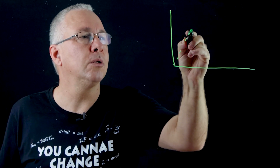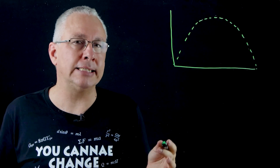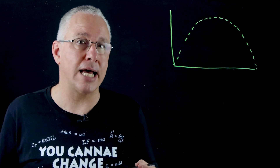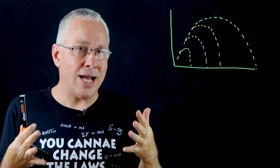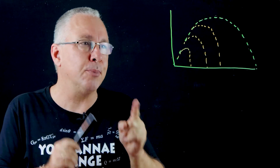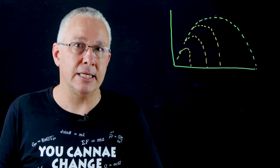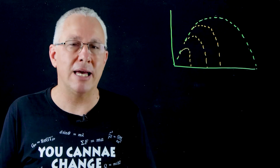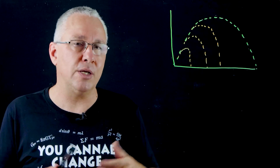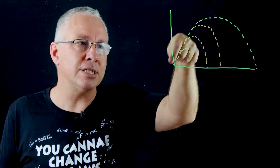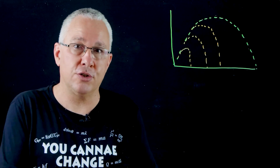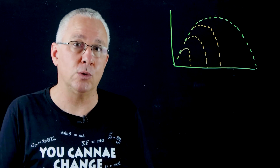Air drag is complex — it's not just a constant force that opposes the direction of motion. Let's draw a representation of normal projectile motion: a parabola where the only force acting is gravity in the downward direction. With drag, the possible paths vary and show no symmetry — they are not parabolas. The key point is that the air resistance force opposes the motion, so its direction changes throughout the flight.